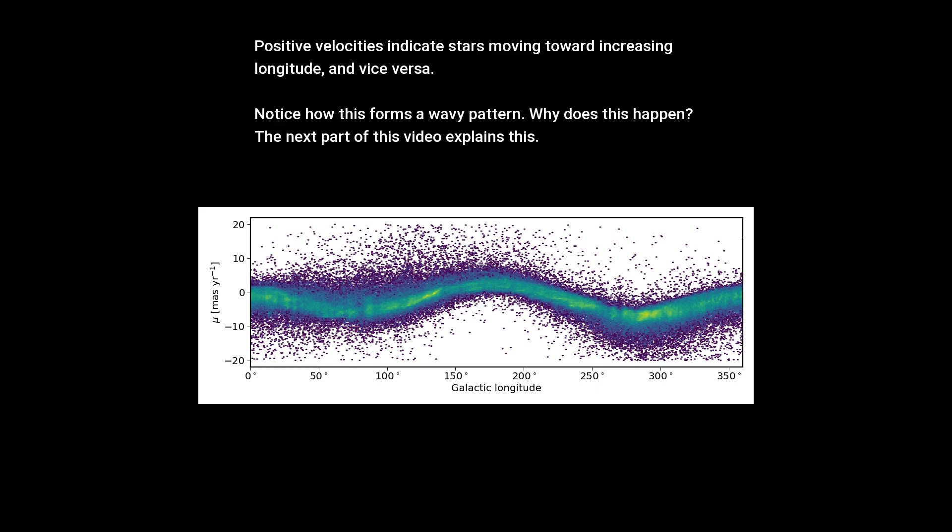Positive velocities indicate stars moving toward increasing longitude, and vice versa. Notice how this forms a wavy pattern. Why does this happen? The next part of this video explains this.